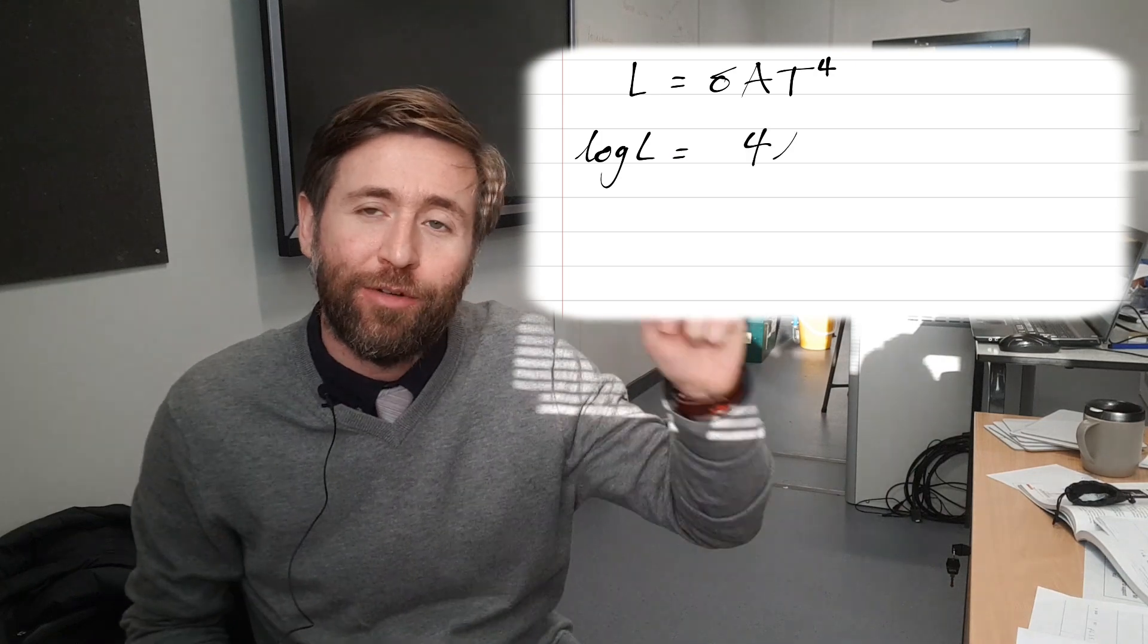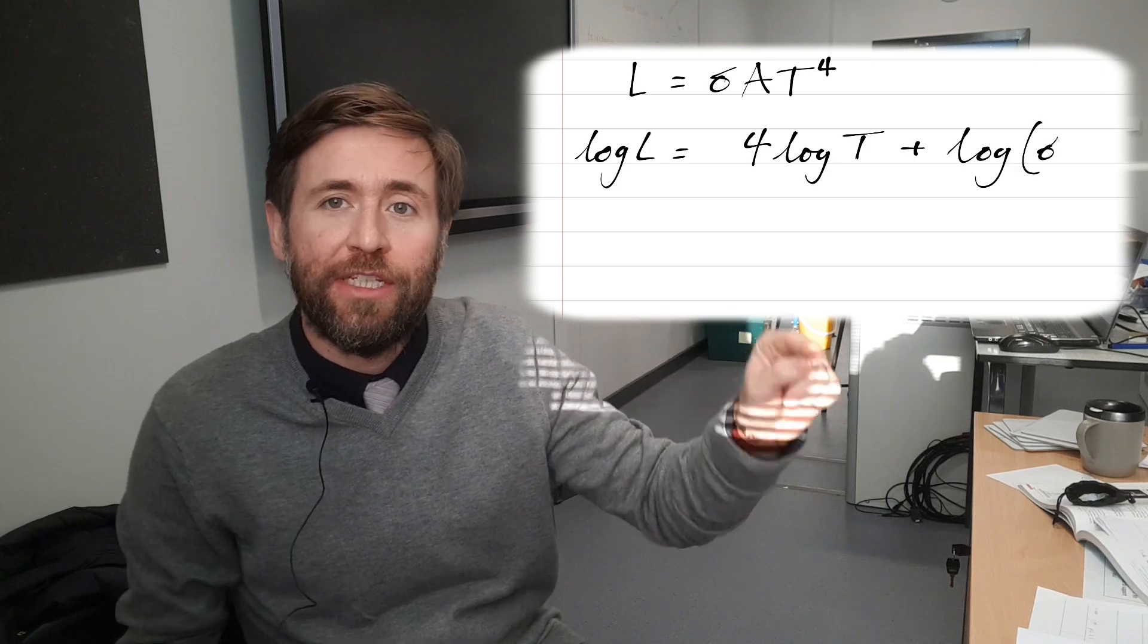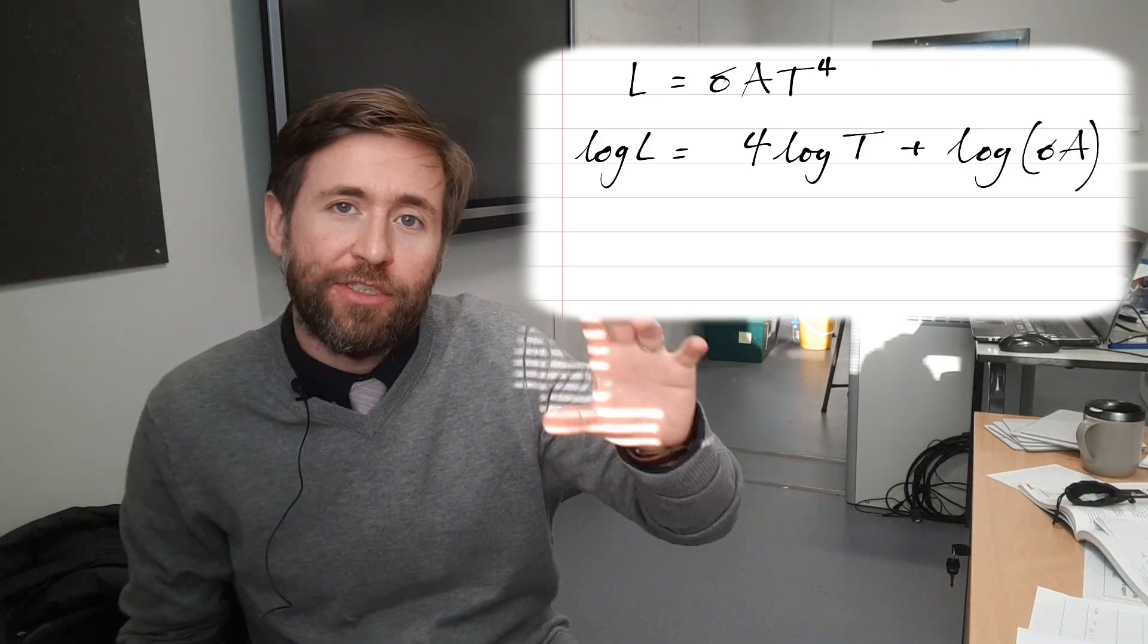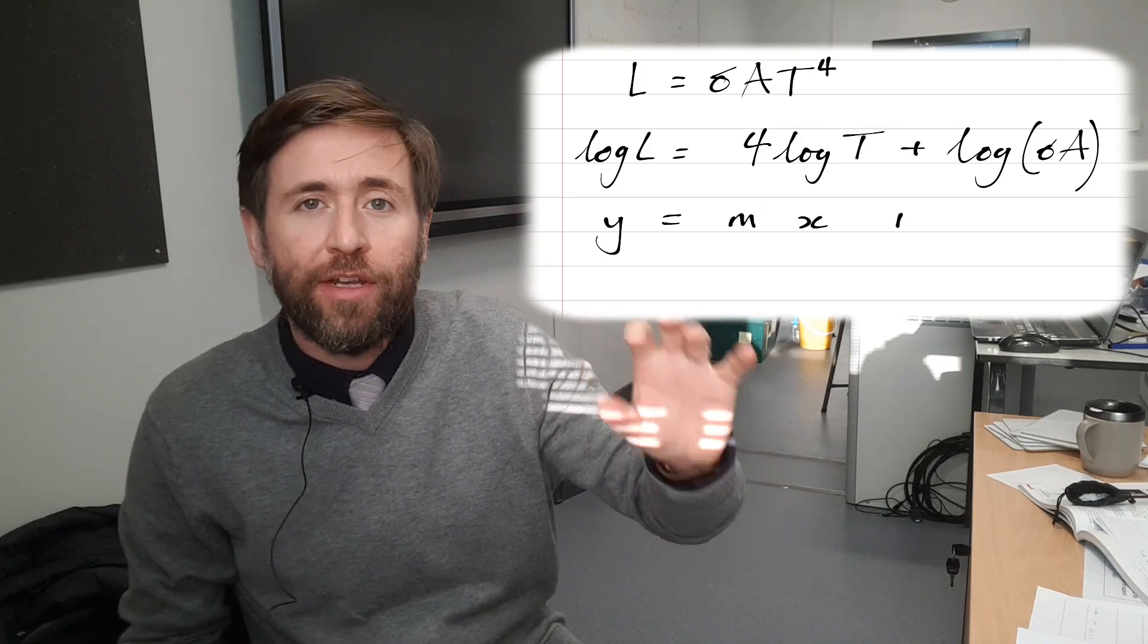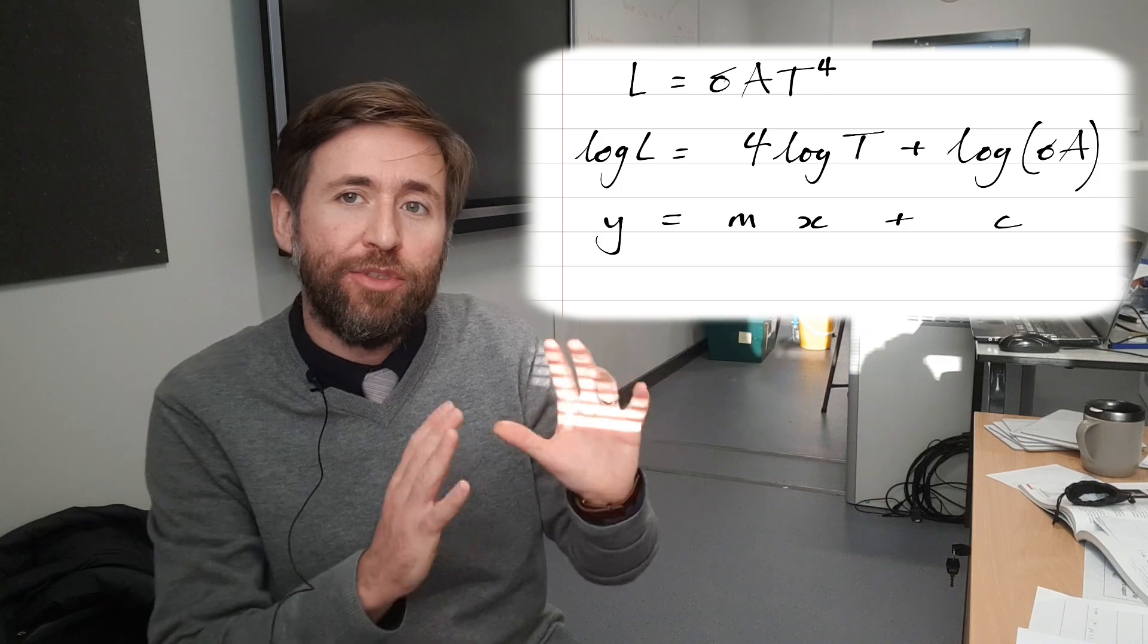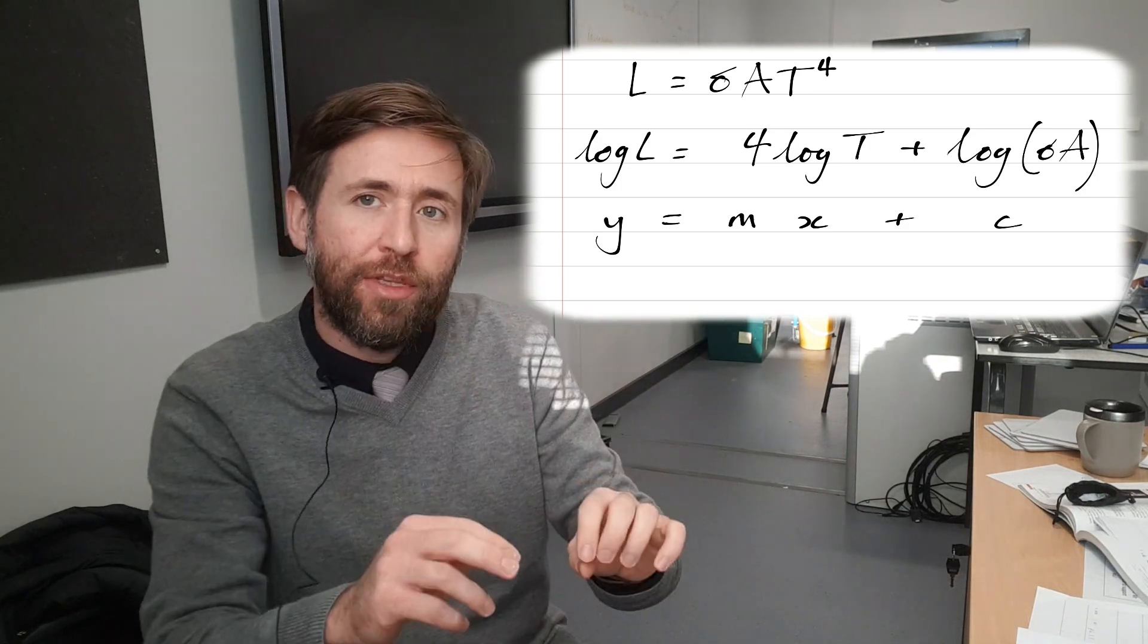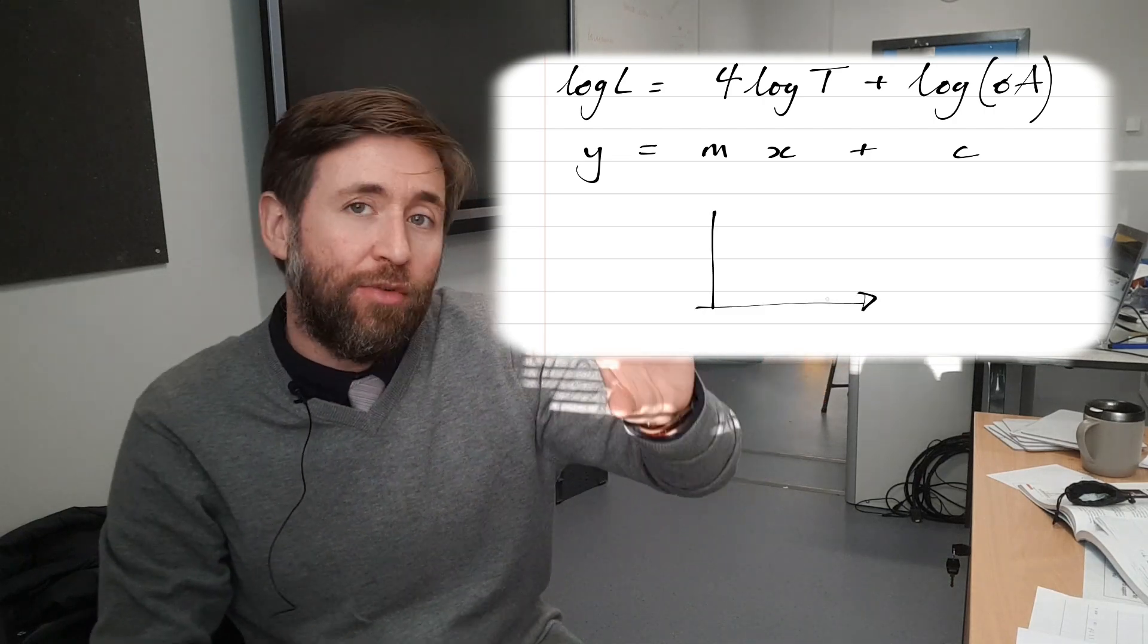So if you recognize power law, your first step is to take logs of both variables. So in this case, it's log L and it's log T. Now, the gradient of the graph is going to be the exponent of the x variable. The gradient of the graph is going to be whatever, in this case, T is raised to. So we should be able to take data, log those two sets of data, plot log L versus log T, calculate a gradient, and it should be 4.